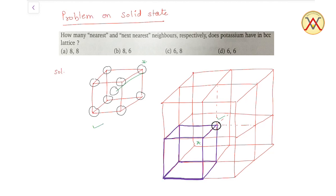यहाँ पर 8 unit cells होंगी, हर unit cell के center पर एक body center atom रखा होगा। तो यह जो black वाला atom आपको दिख रहा है, यह आठों body center वाले atoms से touch होगा। तो इसके nearest neighbors हो जाएंगे 8। अब next nearest की बात करते हैं।